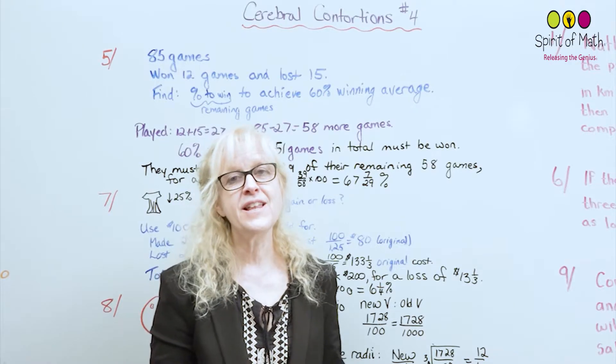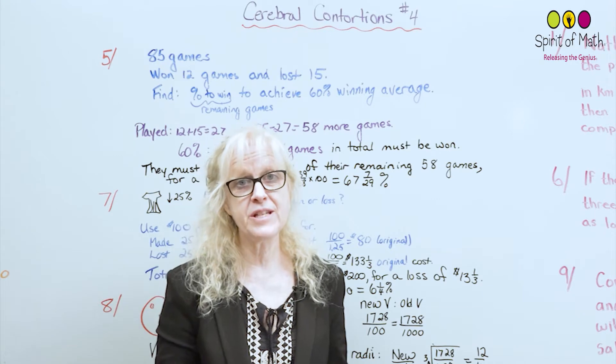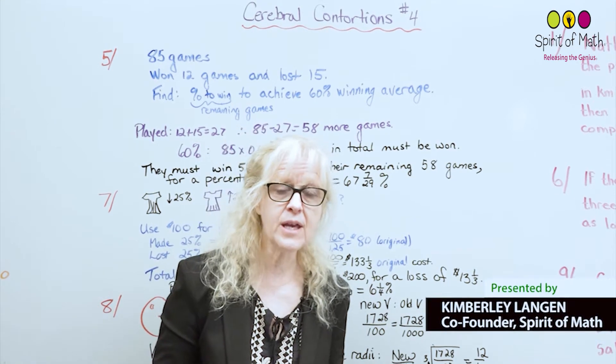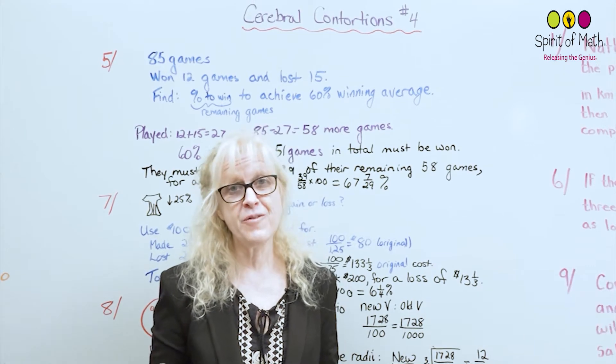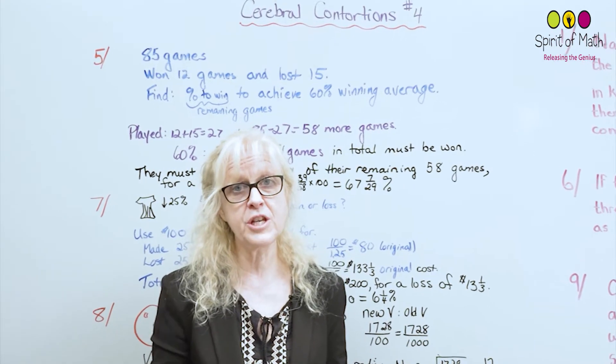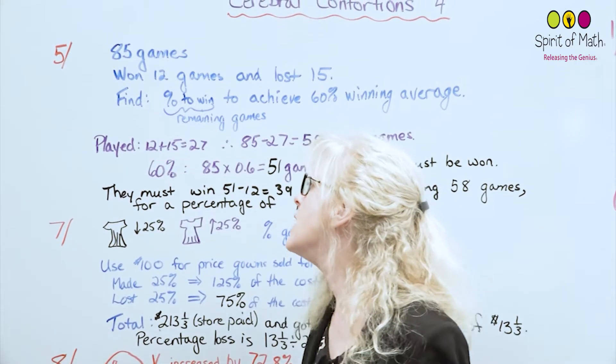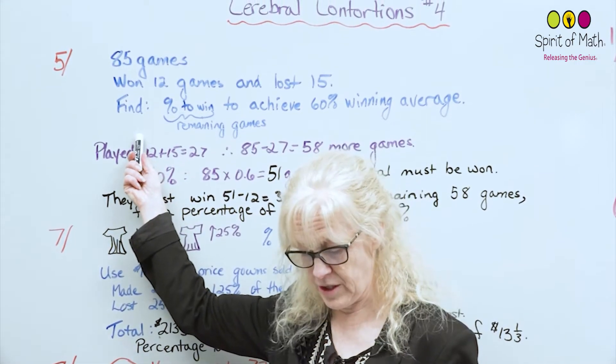Cerebral Contortions number four. The questions I'm going to be taking out today are really the explanations for the reduced bank, and you have all those in front of you. If you take out the sheet, you can follow along. First of all, we'll go through and actually read out the questions.